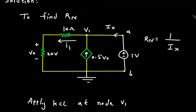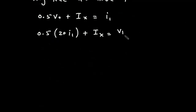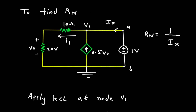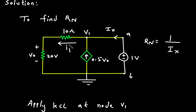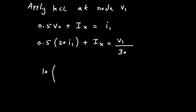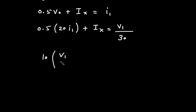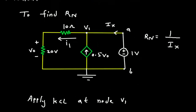Now I1 is V1 minus 0 divided by (10 plus 20), which is 30. So this will be V1 divided by 30. Substituting, V1 minus 0 divided by 30, plus Ix, is equal to V1 divided by 30. Now here we can see that V1 is connected to the 1V source and it is connected to ground, so V1 is equal to 1V.